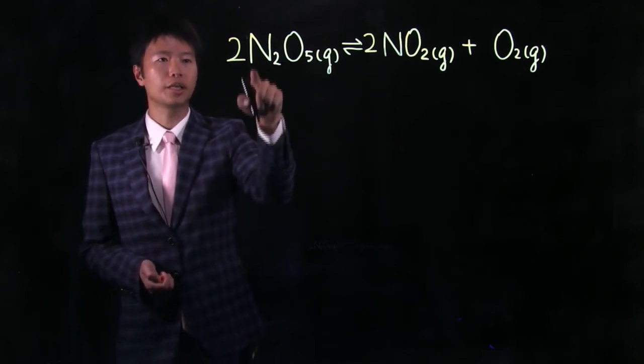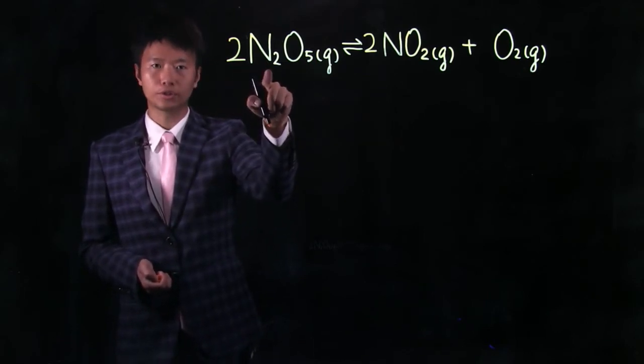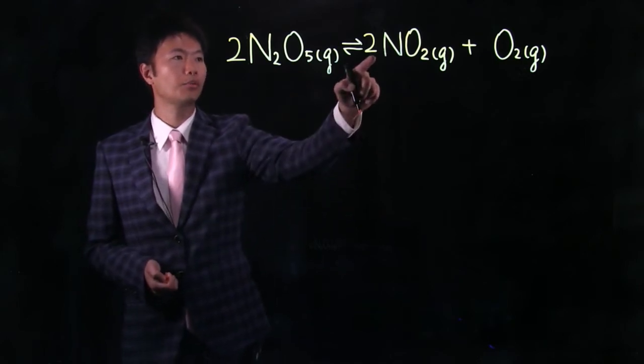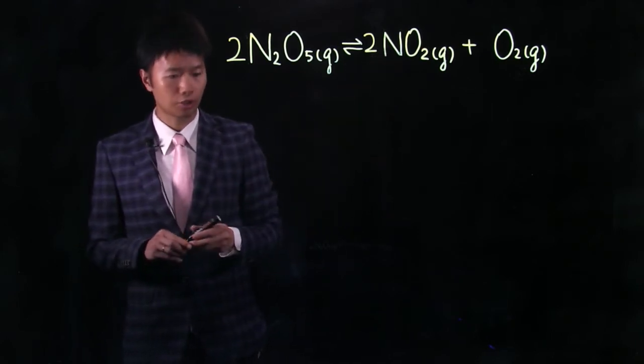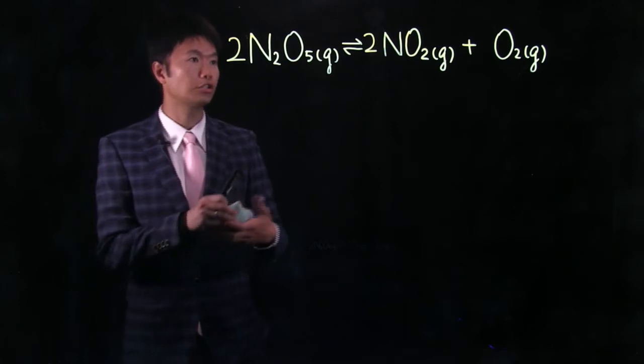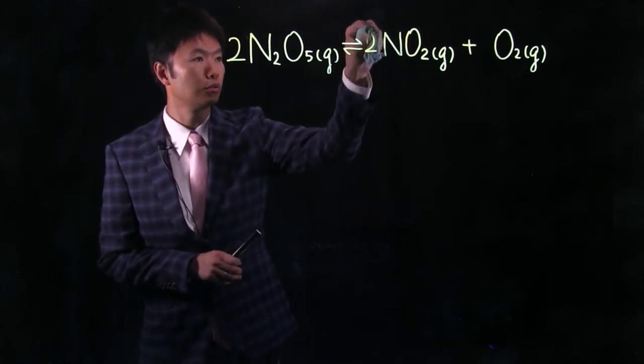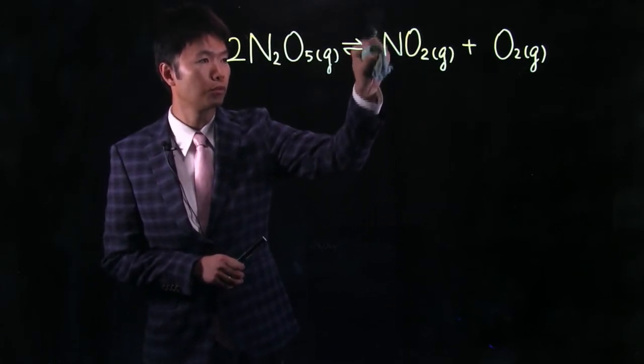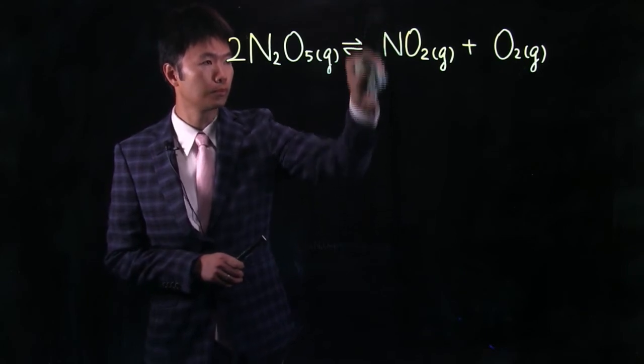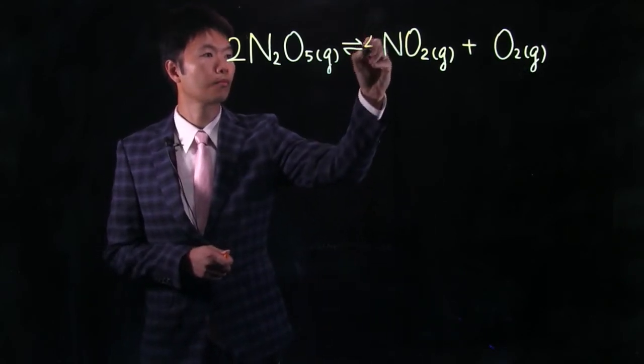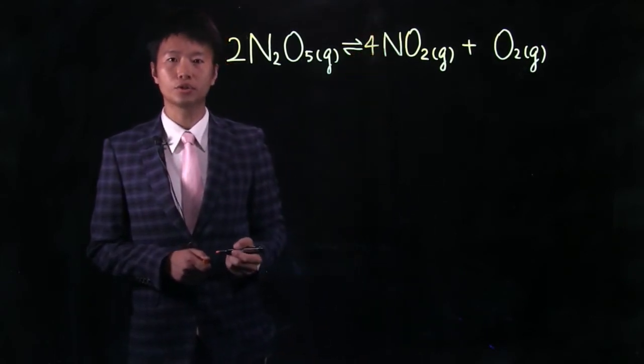Now we look at this reactant again. We have four nitrogen atoms on the right hand side and we only have two nitrogen on the product side. So we should change this two to a four so that we can balance the number of nitrogen.